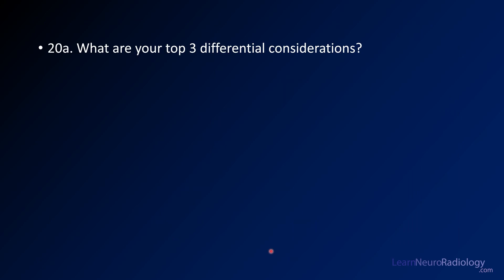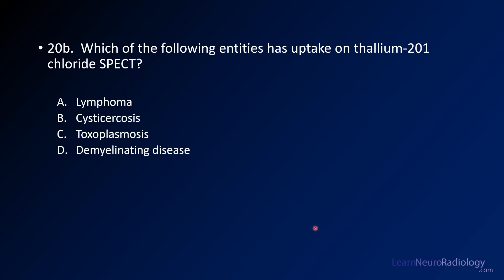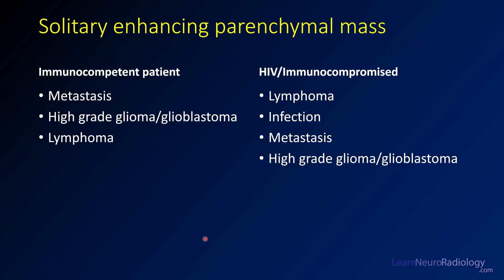So now, I'm being a little nice here. You've got to think about what are your top three differential considerations. Remember, this patient had HIV — that can be a nice clue for you. Number two: which of the following entities has uptake on thallium chloride SPECT? Here you have some lesions that might be in the differential: lymphoma, cysticercosis, toxoplasmosis, demyelinating disease. This is your differential when you see a solitary enhancing parenchymal mass. I try to divide these up as to whether you're looking at an immunocompetent patient or an HIV or immunocompromised patient.